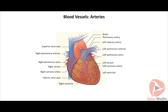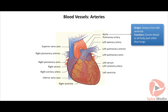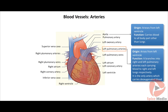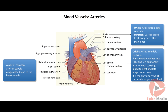Blood vessels that carry blood away from the heart are called arteries; they normally carry oxygenated blood. The systemic aorta and pulmonary aorta are the two main arteries arising directly from the heart. The systemic aorta arises from the left ventricle and carries oxygenated blood to all body organs except the lungs. The pulmonary aorta arises from the right ventricle and branches into right and left pulmonary arteries, carrying deoxygenated blood to the lungs for purification. A pair of coronary arteries supplies oxygenated blood to the heart muscle; blocking of a coronary artery results in a heart attack.